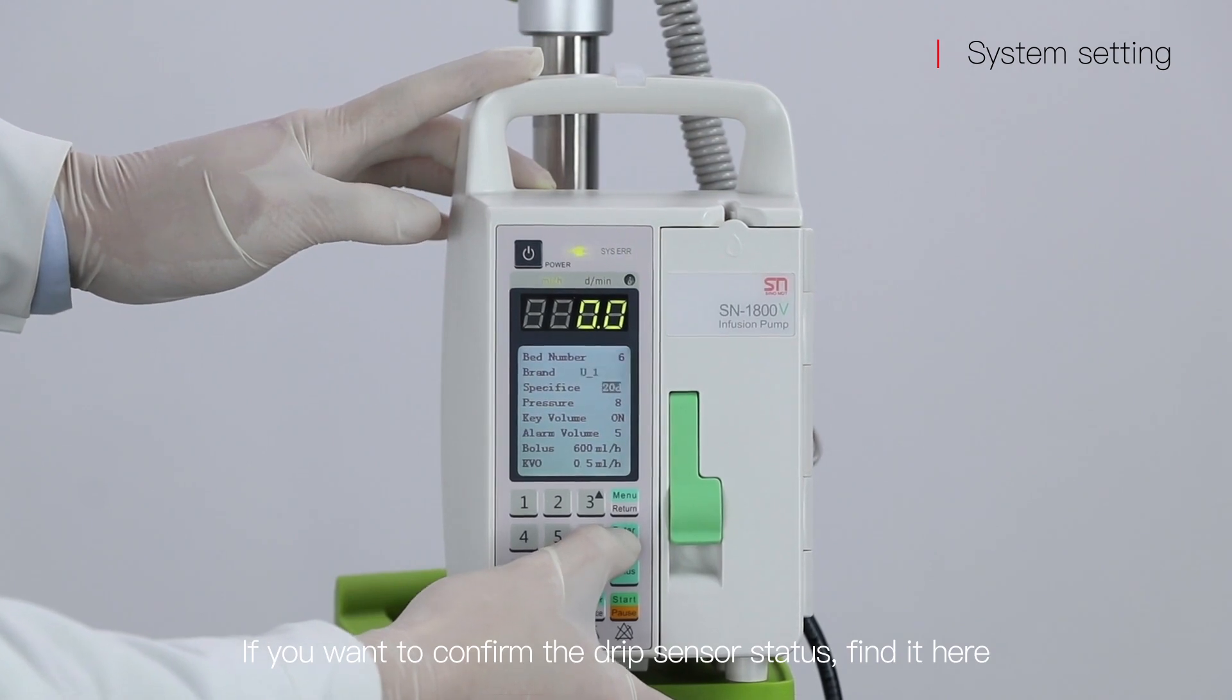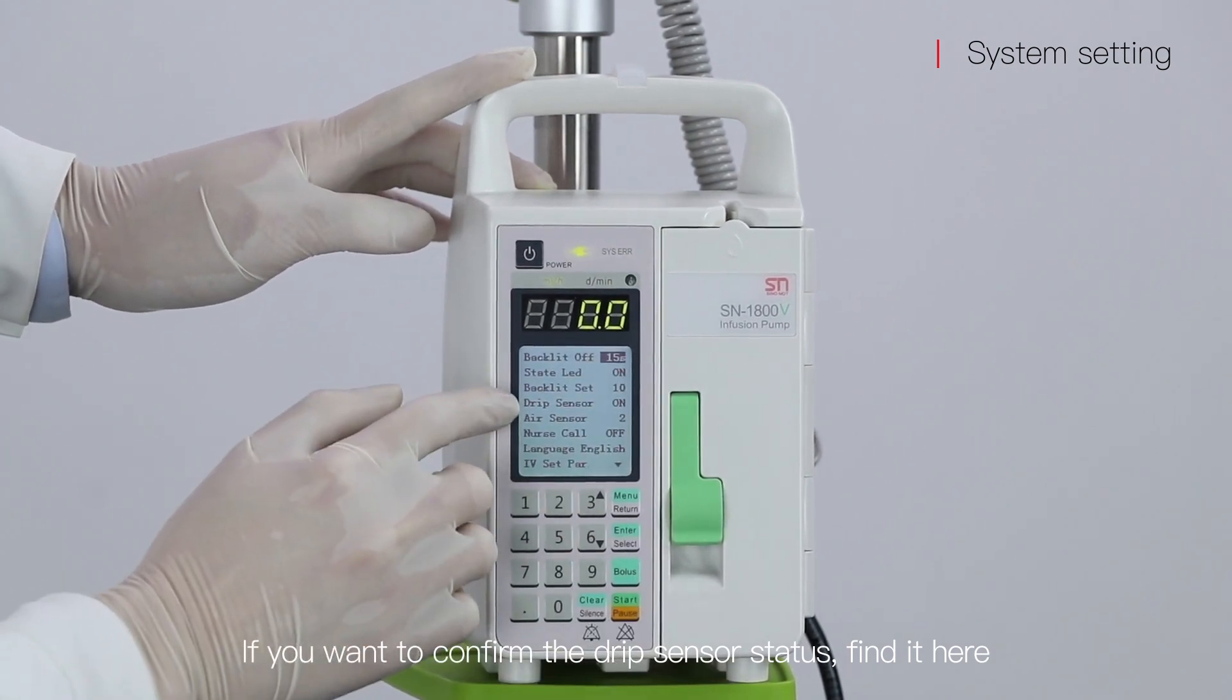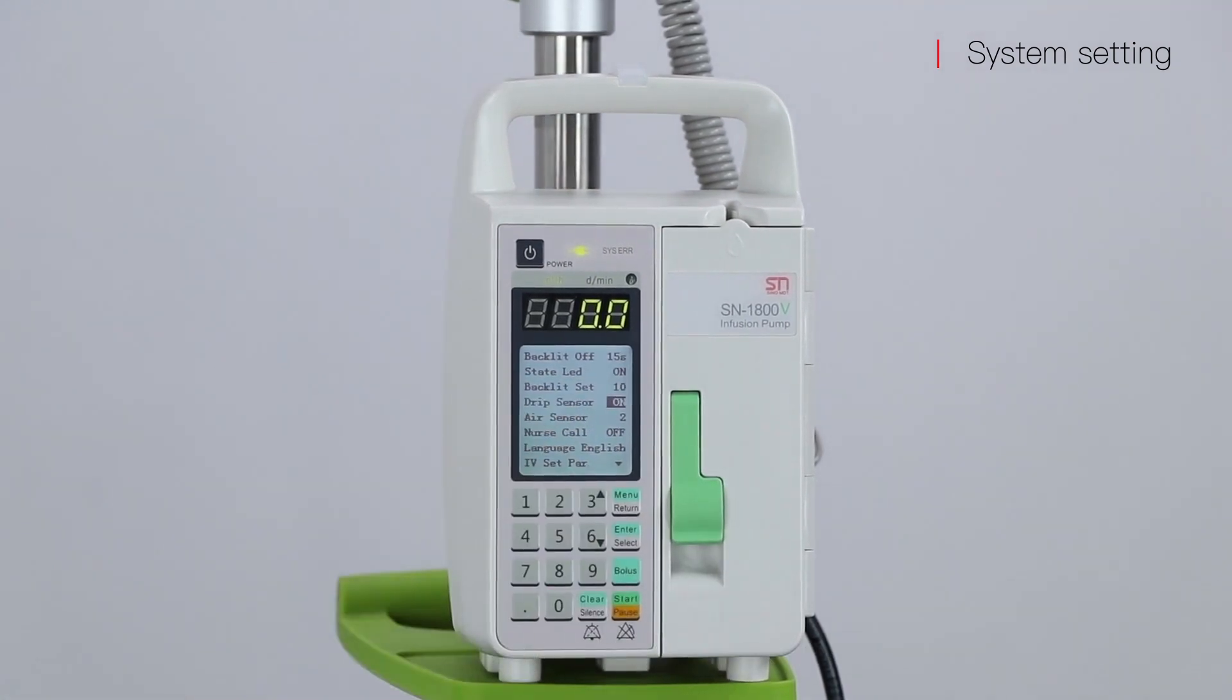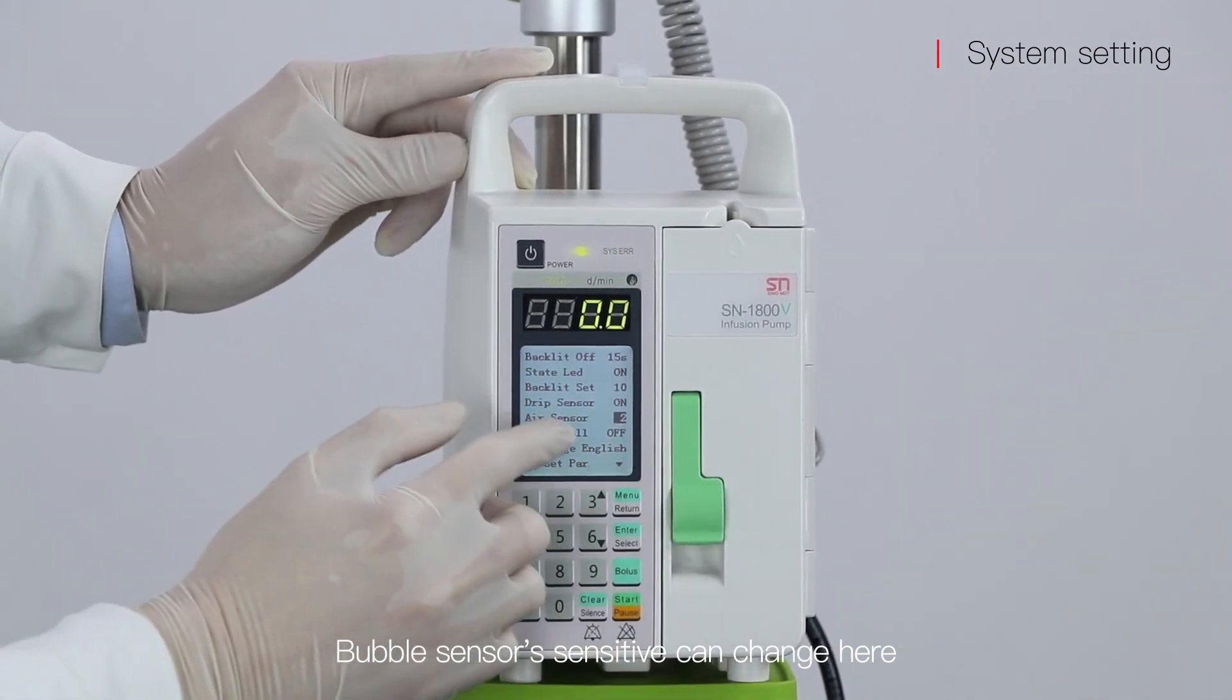If you want to confirm the drip sensor status, find it here. Make sure it is on when you use drip mode. Bubble sensor sensitivity can be changed here.